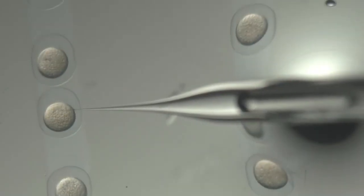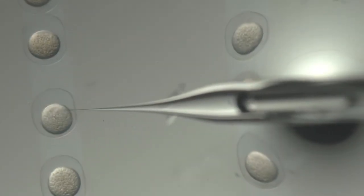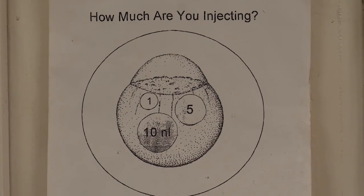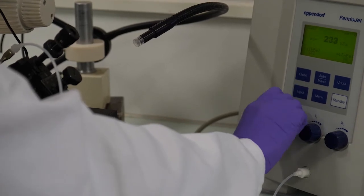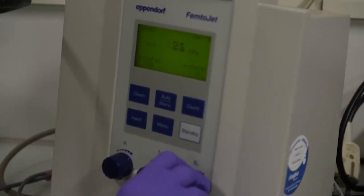A volume of about 3 nanoliters of RNA is injected into a one-cell stage embryo. The injected volume is roughly estimated visually by referring to a schematic. Injection pressure on the microinjector is adjusted according to the volume needed to be injected. Usually the compensation pressure is kept constant.